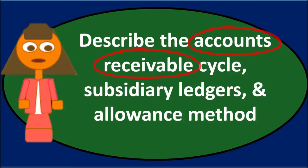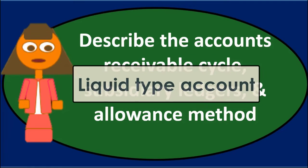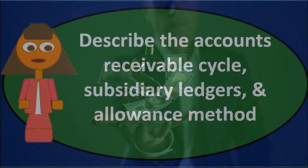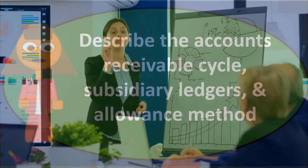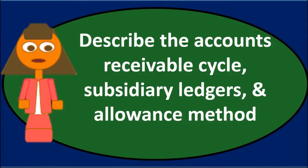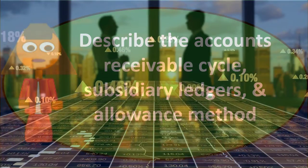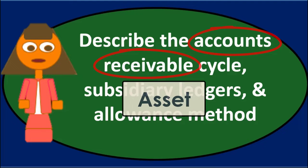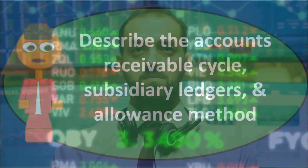First, what is accounts receivable? It's going to be an asset type account — typically a current asset, a more liquid type account, one that we believe will be converted to cash relatively soon, typically within around 30 days. It results from us doing work or providing goods or services on account, and therefore being owed money in the future. The accounts receivable is an asset, but it's not tangible — we don't have the money yet. We expect to have it soon; it's a claim to future assets and therefore has a value.